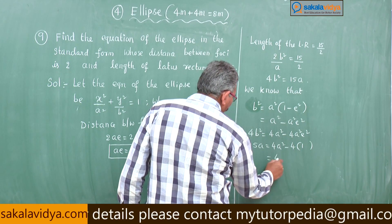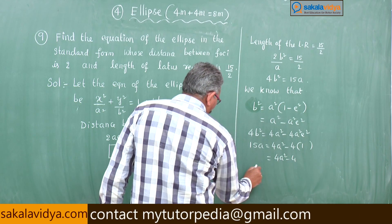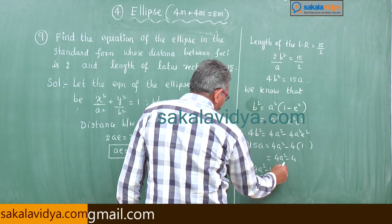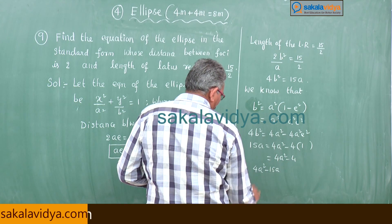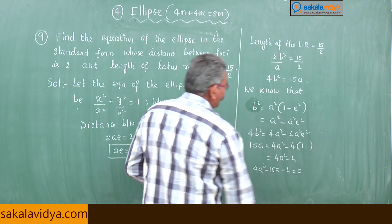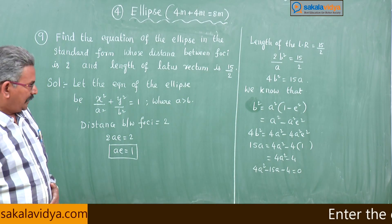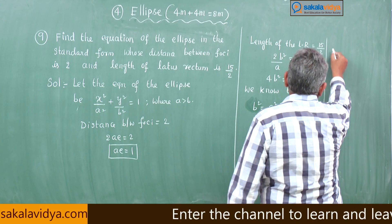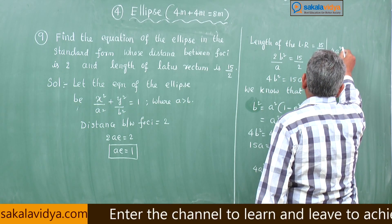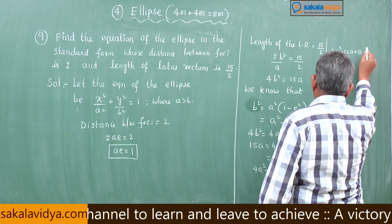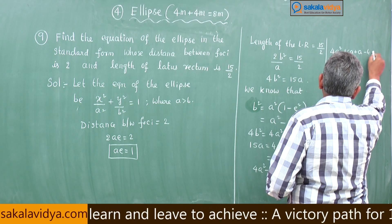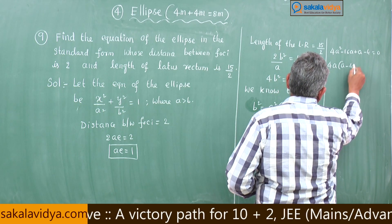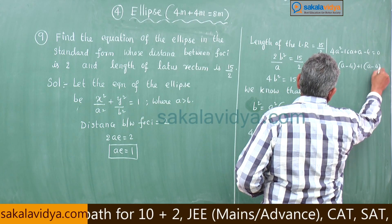So this will be 4a squared minus 4. We get 4a squared minus 15a minus 4 is equal to 0. Let us solve this quadratic equation. It is very simple: 4a squared minus 16a plus a minus 4 is equal to 0. Taking 4a common: a minus 4, plus 1 common: a minus 4 is equal to 0.